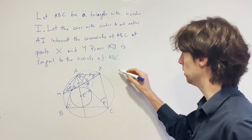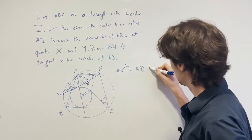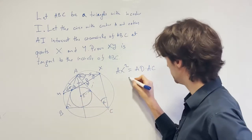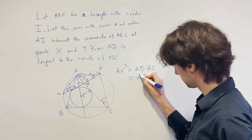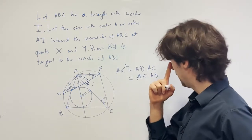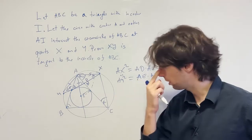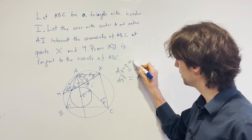And so now we know that AX squared is equal to AD times AC, which we also know is equal to AE times AB. And we also know this is also equal to AY squared, right? All of these things are equal to each other.